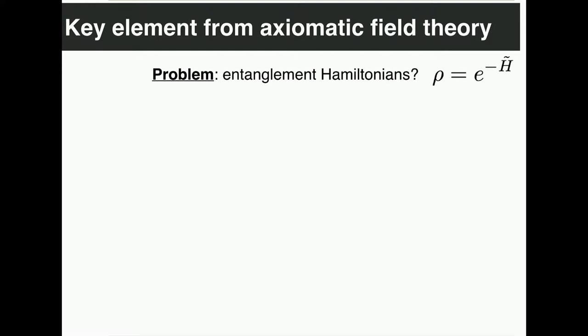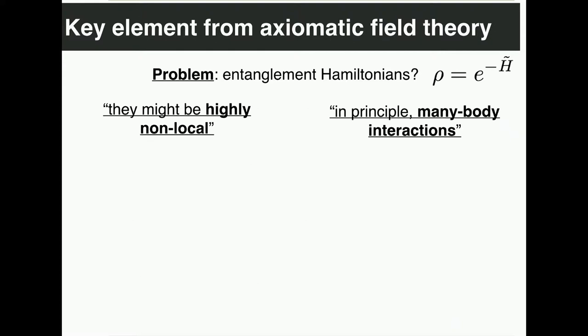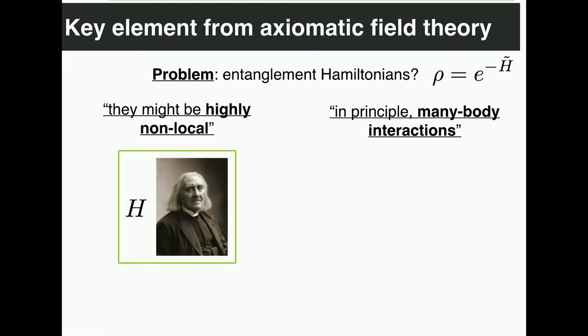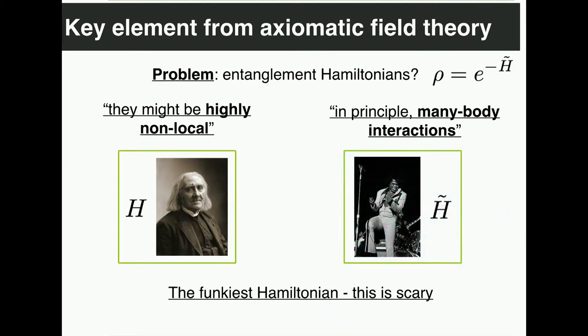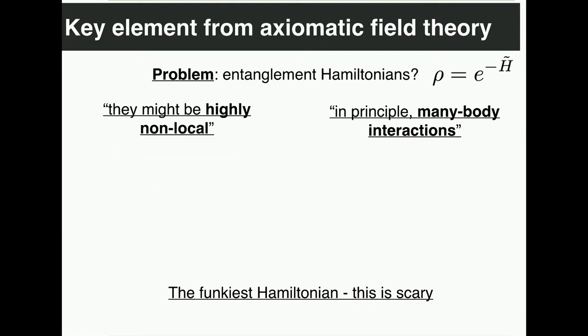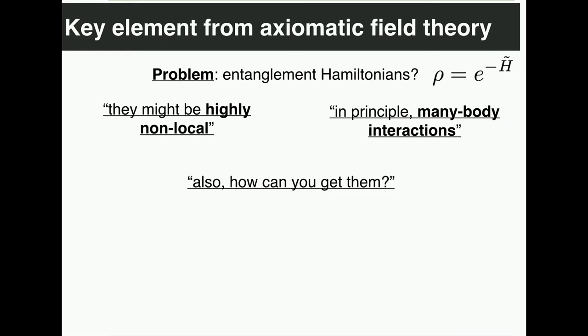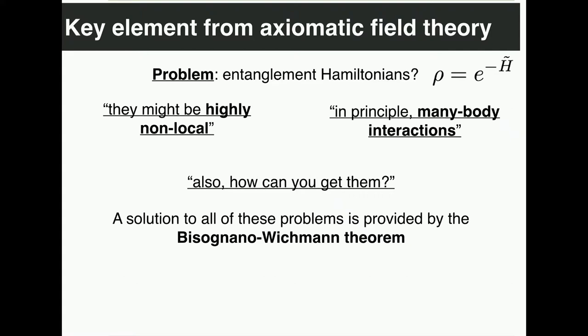The problem is the following: I told you one can almost always write the reduced density matrix as the exponential of an operator. The point is — what is this operator? And typically, the first time I saw this equation I said: okay, it's impossible. This operator H-tilde will be non-local, made out of many-body crazy interactions. Non-local, many-body interactions — this is not good. It would be a very funky Hamiltonian; there is no way of realizing it. However, this is actually not the case at all. There are results from the field of axiomatic field theory that solve this, going under the name of the Bisognano-Wichmann theorem.